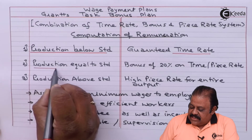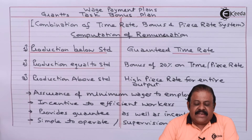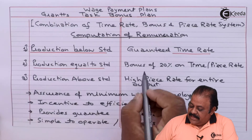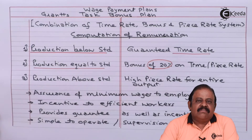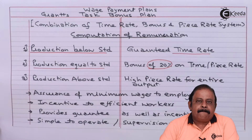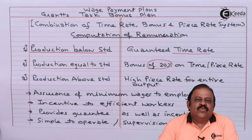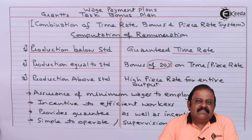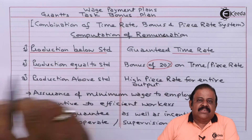If production is equal to standard — if the worker achieves the target — then he will get a bonus of 20% on the wage rate, whether time wage rate or piece wage rate. So there is an incentive for each worker to try to achieve the daily target to get 20% extra as a bonus.